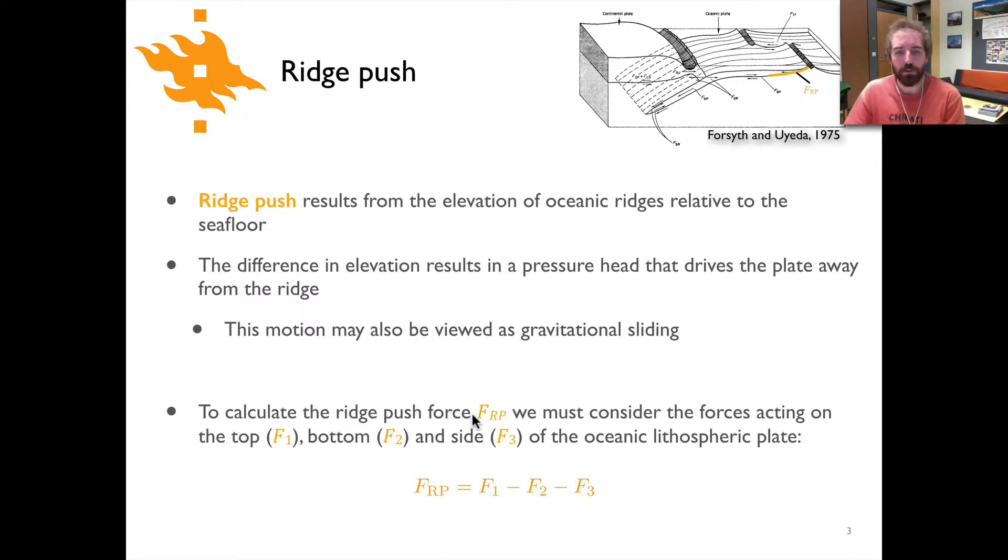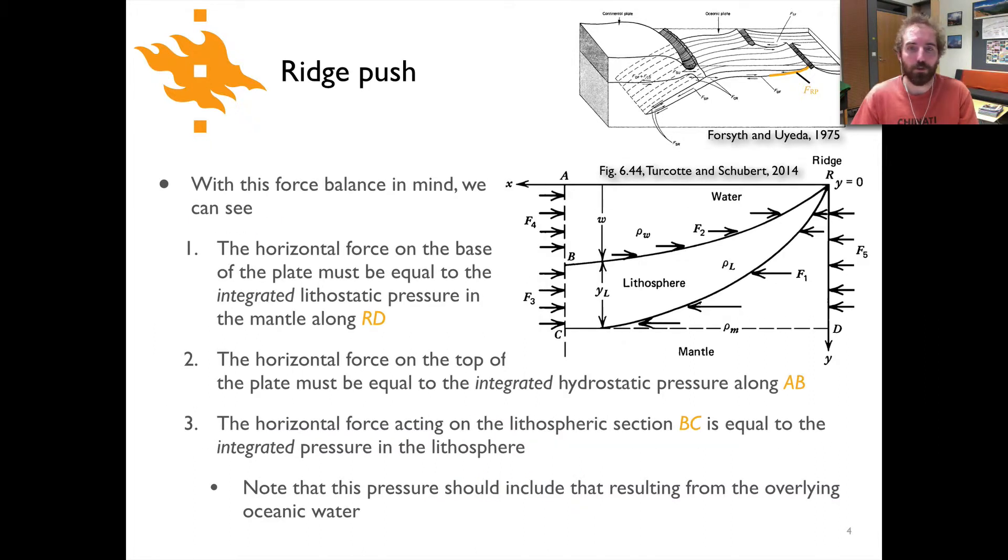So when we talk about ridge push, as it turns out there's basically three components that we need to consider and calculate, and those are the forces that are going to be acting on the top, bottom, and side of the oceanic lithosphere plate. So in other words the ridge push is simply the force acting on the top minus the force on the bottom minus the force on the side, that's how you get your ridge push.